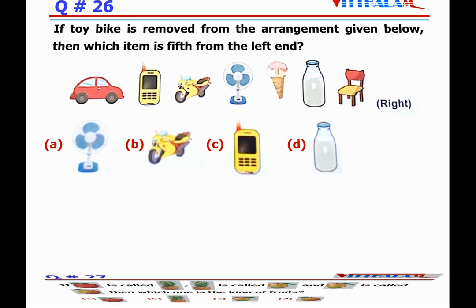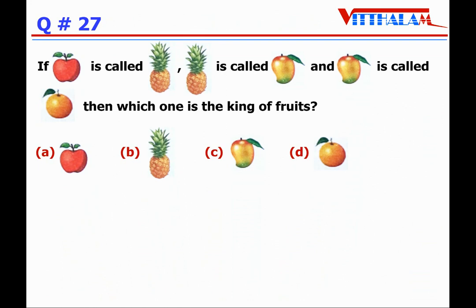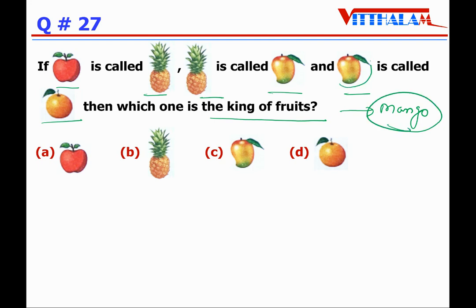Next, Question 27: if apple is called as pineapple, pineapple is called as mango, mango is called as orange — then which one is the king of the fruit? The king of fruits is mango. But in this problem, mango is called as orange. So the king of the fruits, which is mango, will be called orange. So the answer is D — orange.